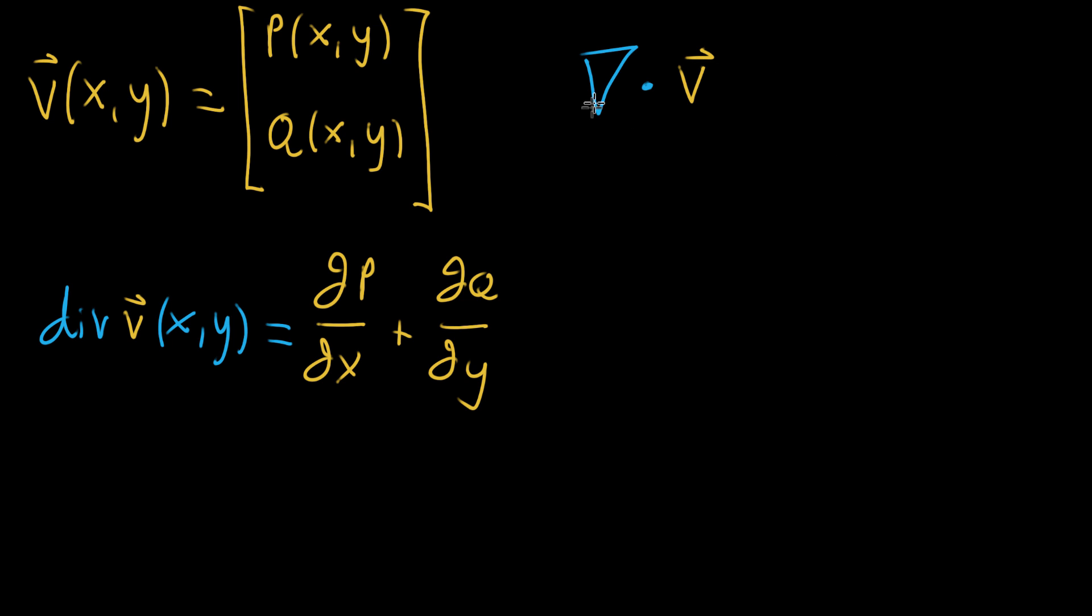And as we did with the gradient, the loose mnemonic you have for this upside-down triangle is you think of it as a vector full of partial differential operators, and that sounds fancy, but all it means is you take this partial partial x, a thing that wants to take in a function and take its partial derivative, and that's its first component, and the second component is this partial partial y, a thing that wants to take in a function and take its partial derivative with respect to y.